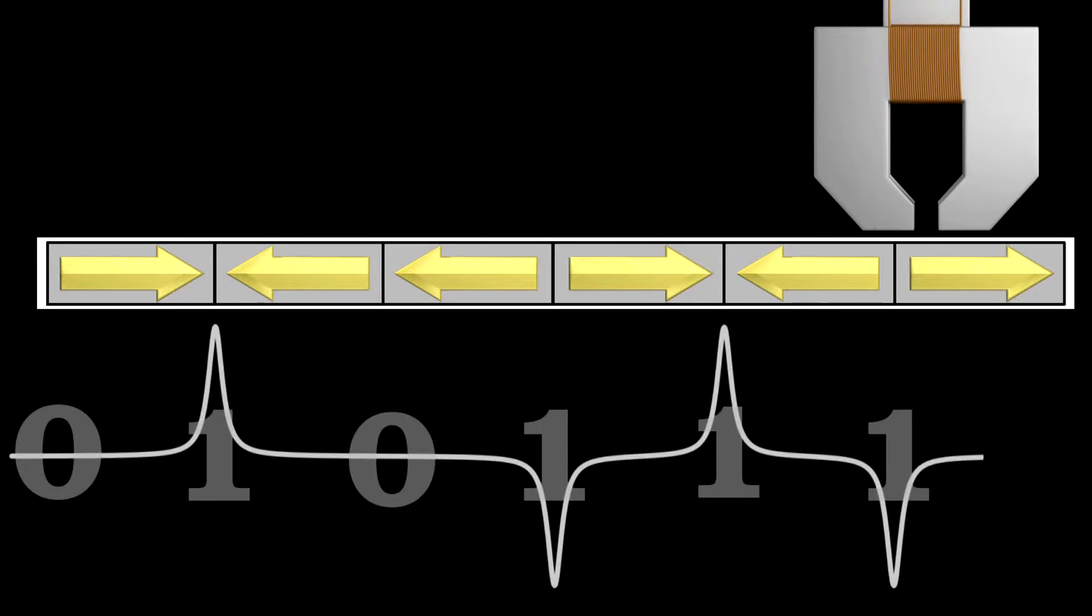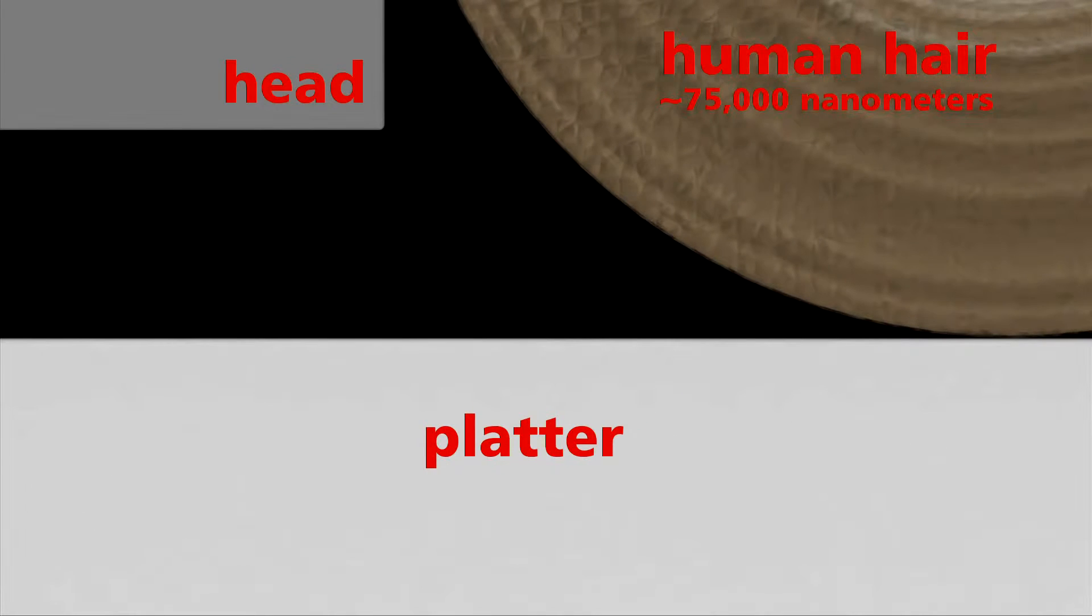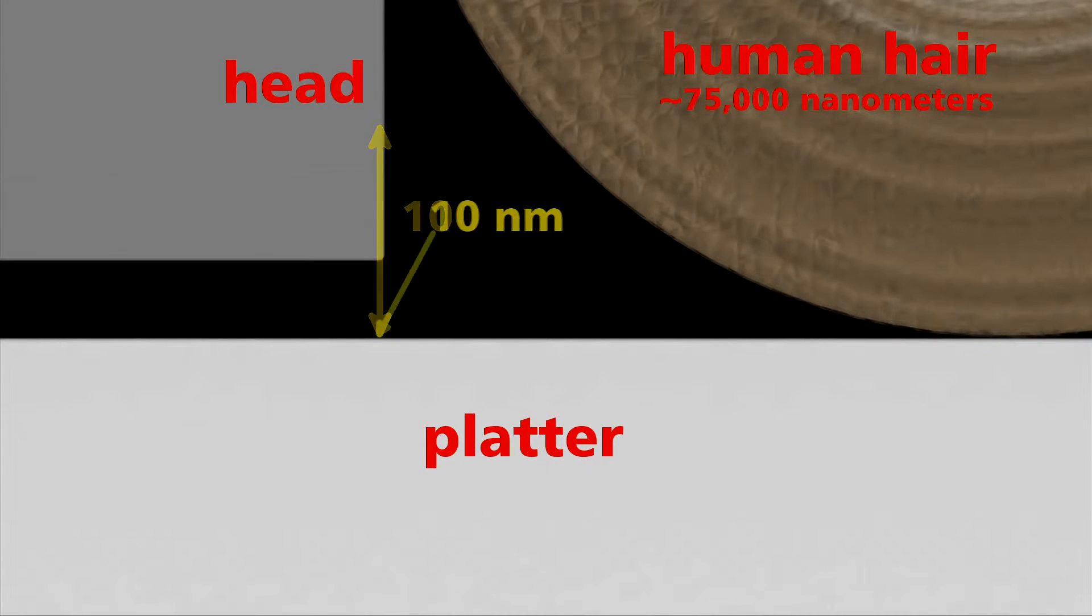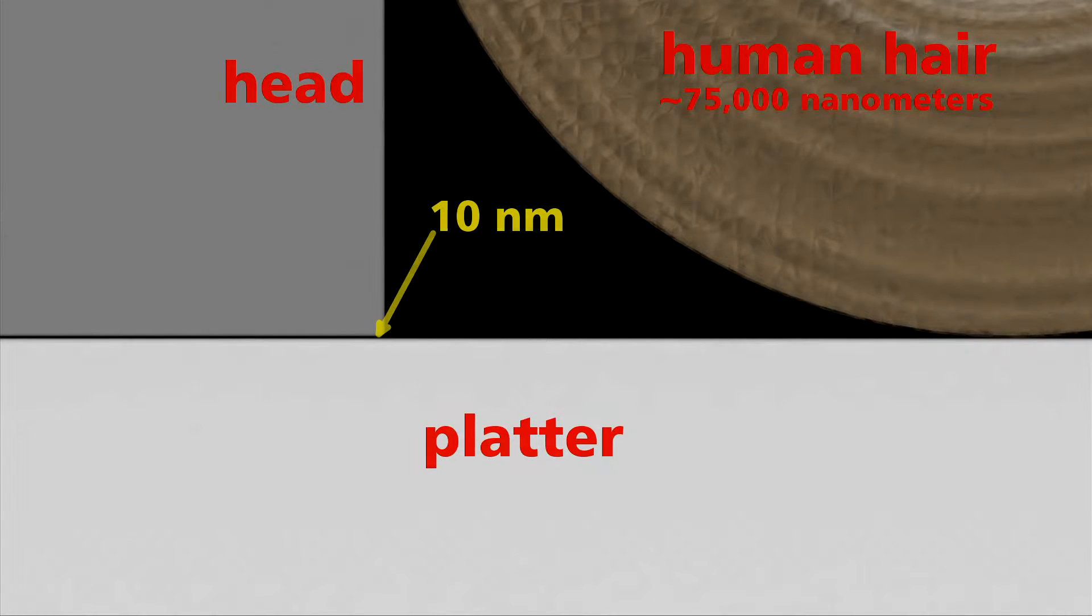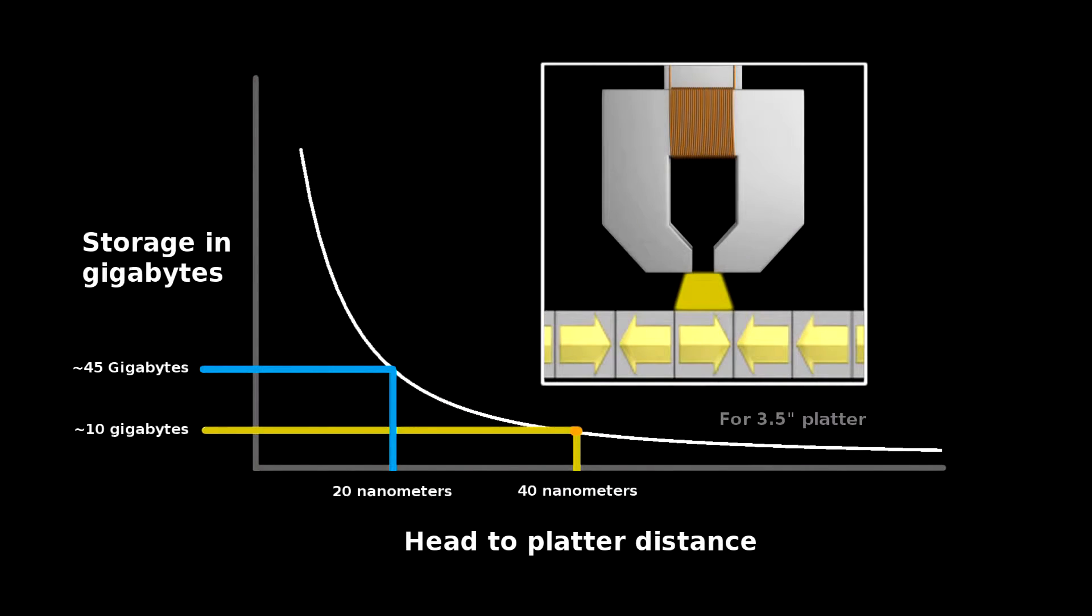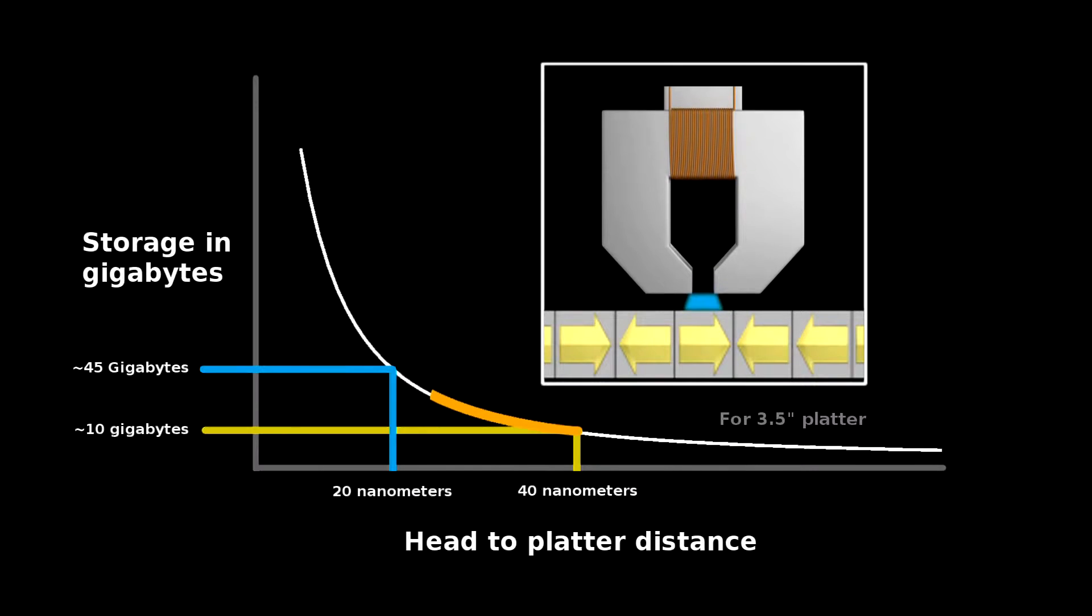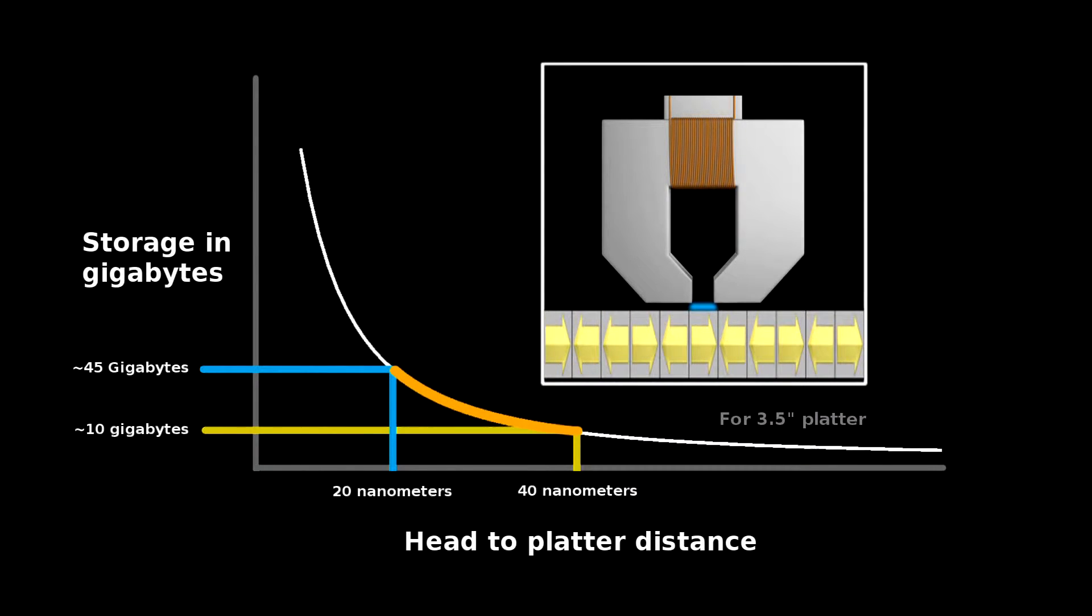The head gets astonishingly close to the disk surface—100 nm in older drives, but today under 10 nm in the newest ones. As the head gets closer to the disk, its magnetic field covers less area, allowing for more sectors of information to be packed onto the disk surface.